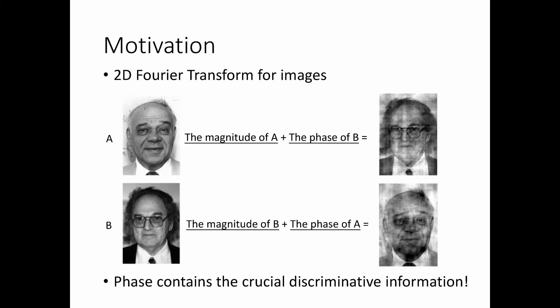If we recover a new image with the magnitude of B and phase of A, we will obtain a visually recognizable image that is very similar to A. So we can argue that the phase contains the most crucial discriminative information.